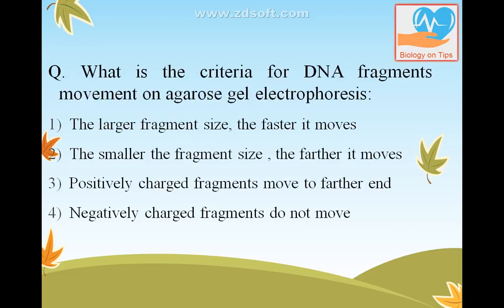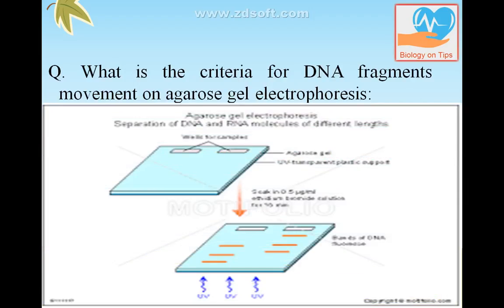What is the criteria for DNA fragment movement on agarose gel electrophoresis? The answer is: the smaller the fragment size, the further it will move. You can see in the diagram there are three strands — the smallest moves the furthest.